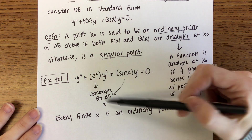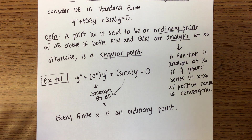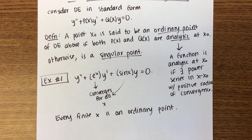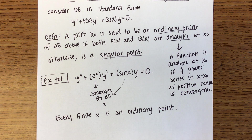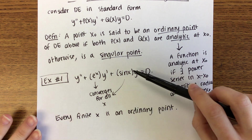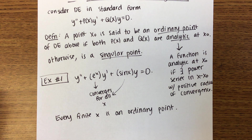You could do a test of convergence and find the radius of convergence like we did last week — we did the ratio test. We're not going to do that over and over again. If you don't know that sin(x) converges for all x, you'll have to do the ratio test.